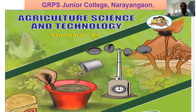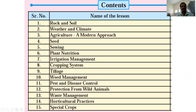In this subject, there are a total of 15 lessons. The first lesson is Rock and Soil. The second lesson is Weather and Climate.